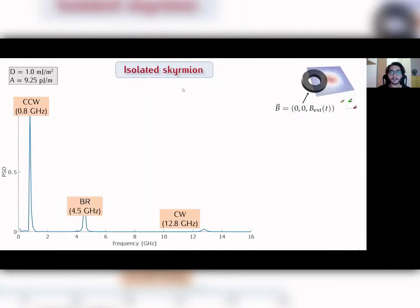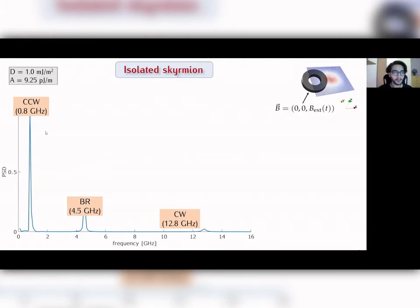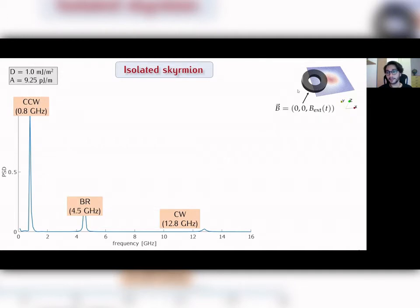For the isolated skyrmion, here we have a spectrum obtained at a specific pair of values of D and the exchange constant A. The spectrum is obtained from the sum of the fast Fourier transforms of the out-of-plane magnetization at each cell.